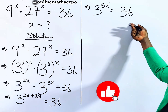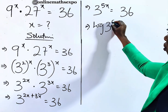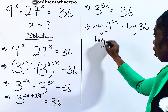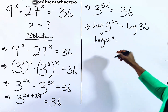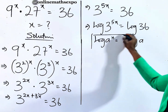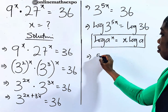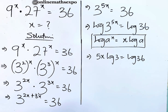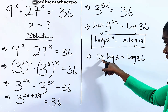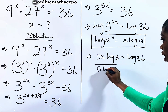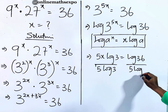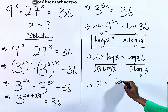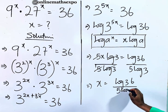Now what we need to do is take the log of both sides. So we have log of 3 to the power of 5x equal to log of 36. Remember, for every log of a to the power of x, the power always multiplies the log. Applying this, we get 5x times log 3 equal to log 36. Your target is x, so divide both sides by 5 and log 3. This gives us x equal to log 36 divided by 5 log 3.